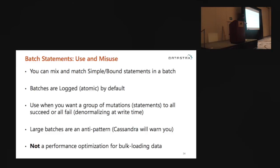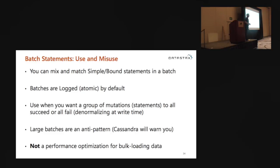Batch statements. A couple of things to know. First, what they aren't: these are not an optimization to bulk-load data. Batches in other databases are used to load data — that's not what they're for in Cassandra. Logged batches in Cassandra are used when you're doing denormalization — writing to multiple tables — and you want to guarantee that either all the writes succeed or none do, providing an atomic guarantee. You can mix and match different statement types in a batch — prepared/bound statements and simple statements.